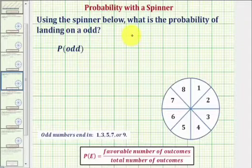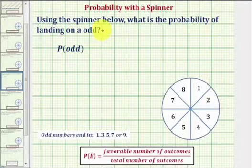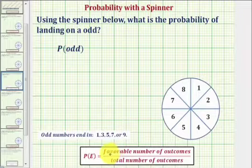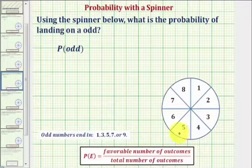Using the spinner below, what is the probability of landing on an odd? To find the probability of an event, we compare the favorable number of outcomes to the total number of outcomes.